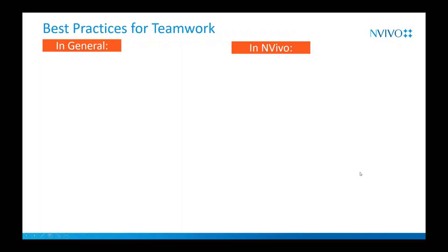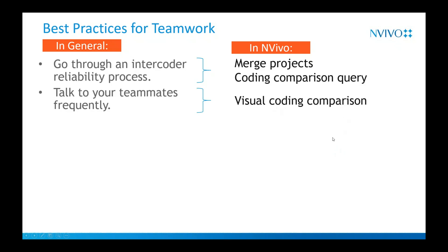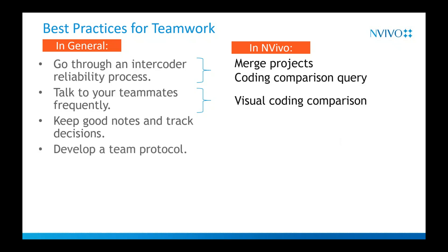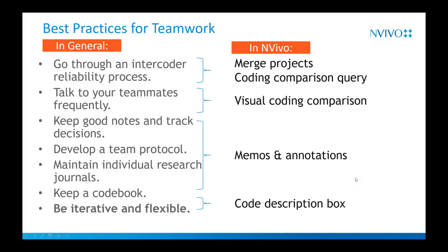I'm going to go over some best practices to work as a team — this is actually from one of our certified NVivo trainers. You want to go through an intercoder reliability process with your team, which you can do with NVivo by merging projects and using our coding comparison query. Also, talk to your teammates frequently and check what they're doing. Keep good notes and track your decisions. Develop a team protocol. Maintain individual research journals or a team journal — this can all be done within memos and annotations in NVivo. Keep a code book with descriptions, and always be iterative and flexible.